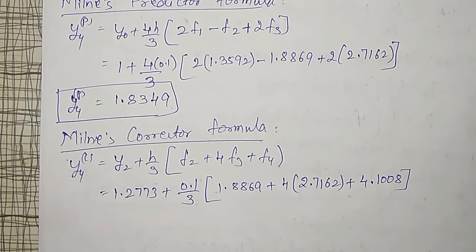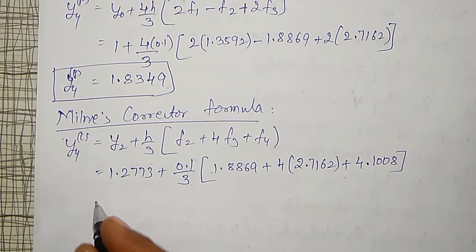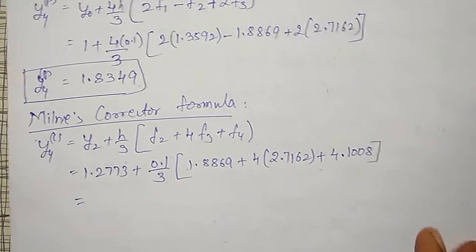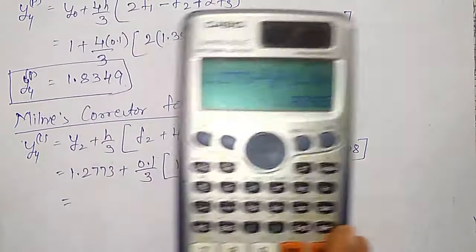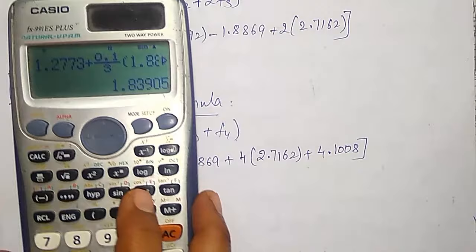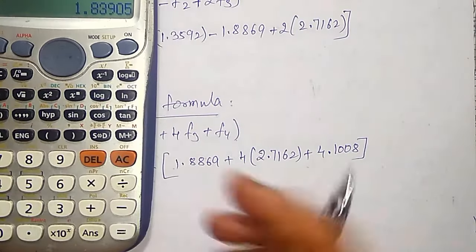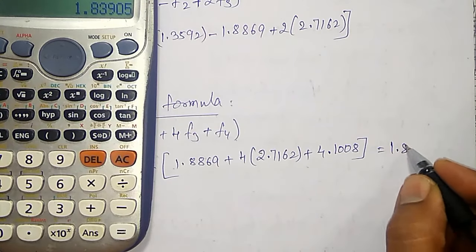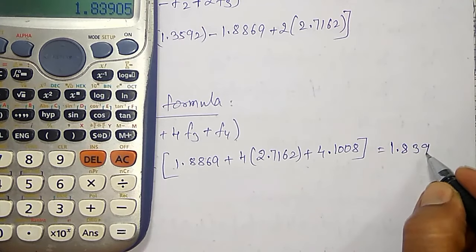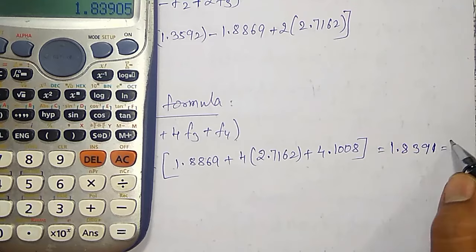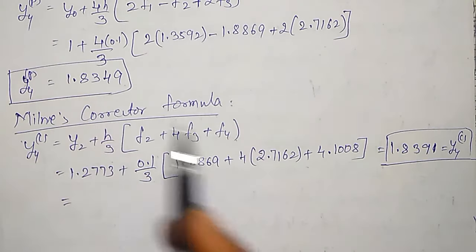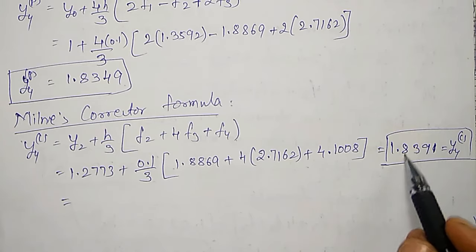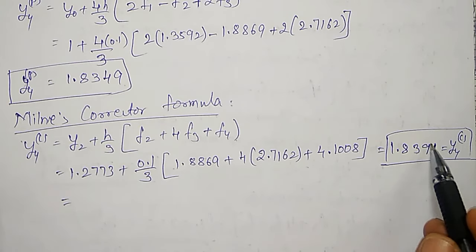Use that f4 here in this formula, that is f4 is equal to 4.1008. Operate this in the calculator without operating AC button, and I will get the final answer. After operating all these things in the calculator, I am going to get the corrector value as 1.8390. This is my y4 corrector, first corrector value. Just compare: predictor value 1.8349, corrector value 1.8390. I want equal up to 3 decimal places — the third decimal place is varying.